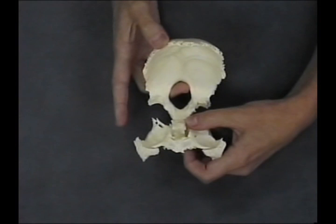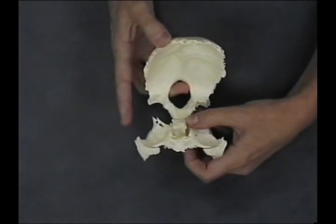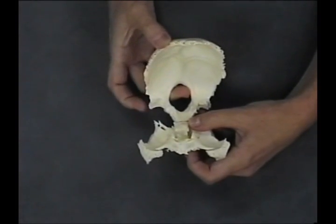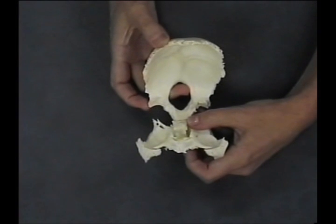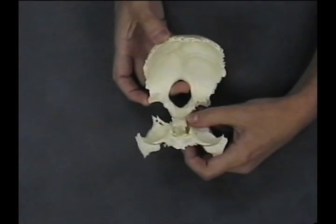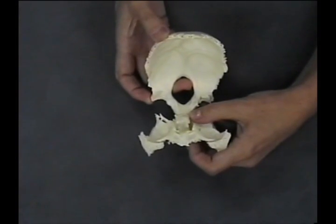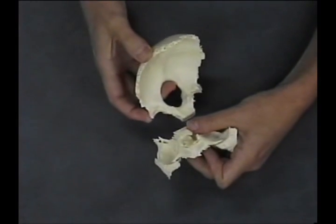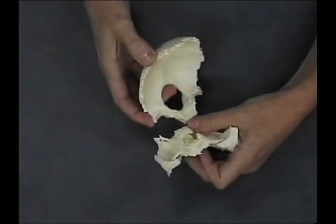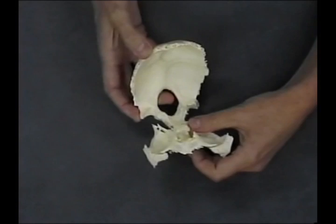Paying attention to where the greater wing of the sphenoid is up here on the right, and the squamous down here on the right. As I do a right lateral strain, I go like this, and it's going to look like this. What are my fingers going to be doing?